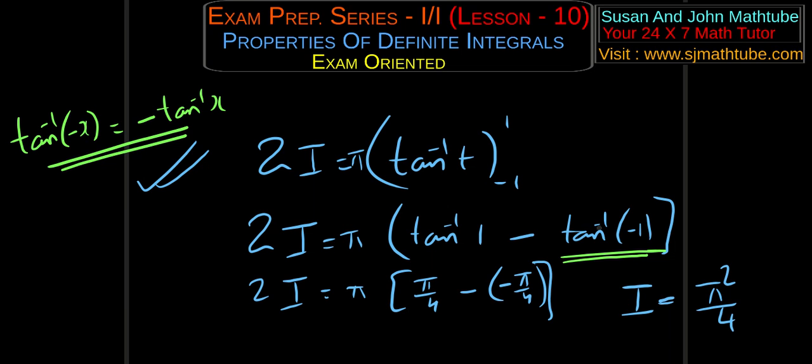Simplifying: 2I equals π times (π/4 plus π/4) equals π times π/2, giving I equals π²/4. Note that tan⁻¹(minus x) equals minus tan⁻¹ x — some of you might need that point. I'll stop the video here; these problems are important. I'll be back with the next video where we discuss more properties, and after that we move toward improper integrals.